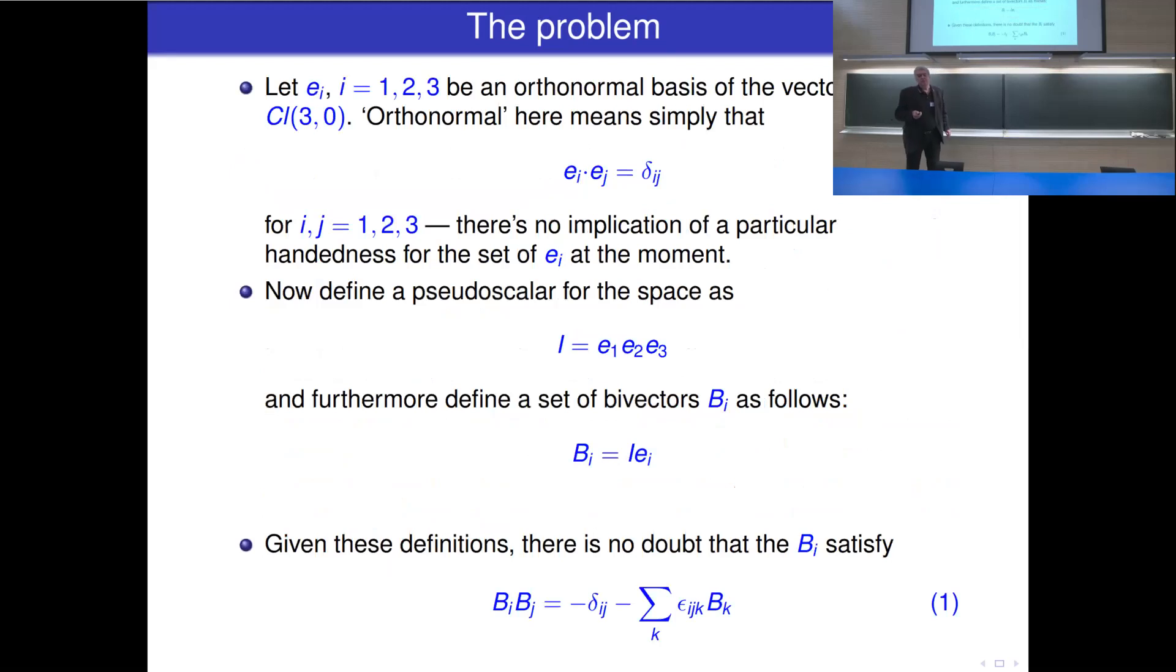So here's the problem. Let e i, i equals 1, 2, 3, be an orthonormal basis of the vectors of the ordinary Clifford algebra CL(3,0). Orthonormal simply means e i e j is delta i j. There's no particular implication of any handedness for the set of e i at the moment. Now, let's define a pseudoscalar for that space as I equals e1 e2 e3, and define a set of bivectors from that as follows: b i is I e i. That's very standard. Now, given those definitions, there is no doubt that the b i satisfy the relations that were written down earlier. b i b j is this thing with a sum. We'll call that equation 1.